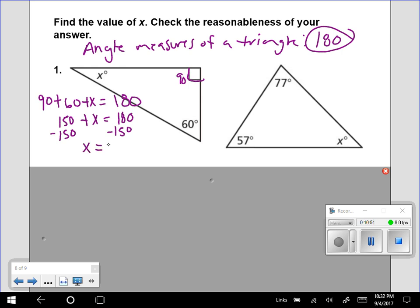So x equals 30. If I were to add 30, 60, and 90, I would get 180. And that's how I could check my answer.